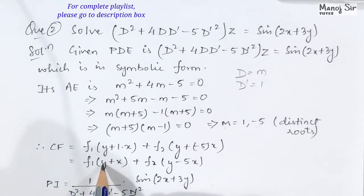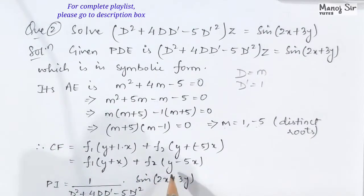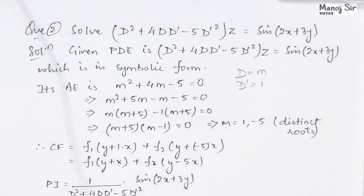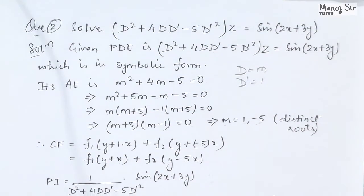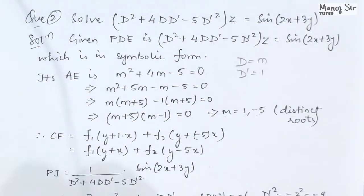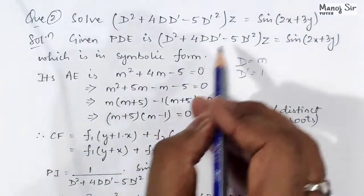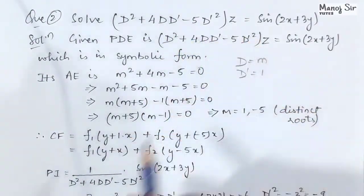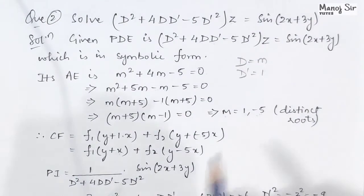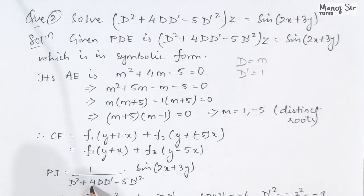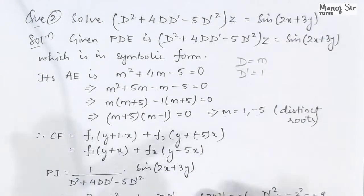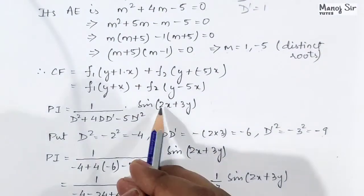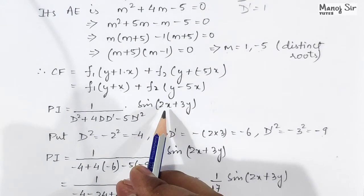The complementary function is CF = f1(y + x) + f2(y - 5x). Now we come to the particular integral (PI) part. The PI is represented as one over the operator expression applied to the function — that is: PI = 1/(D² + 4DD' - 5D'²) × sin(2x + 3y). Since we have a trigonometric function, let us see how to find the PI.